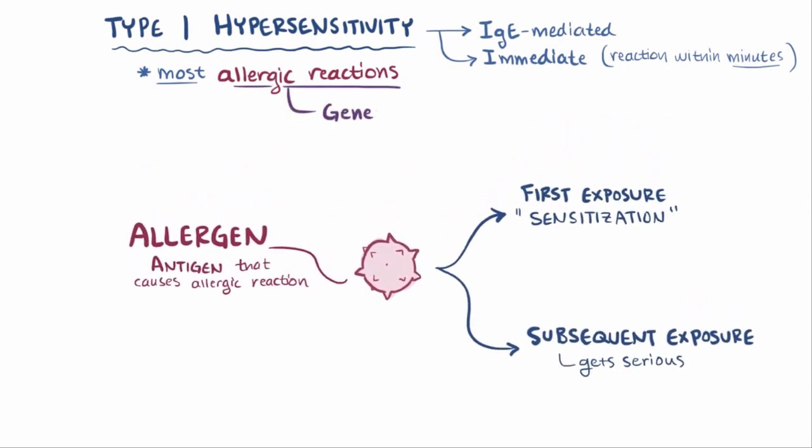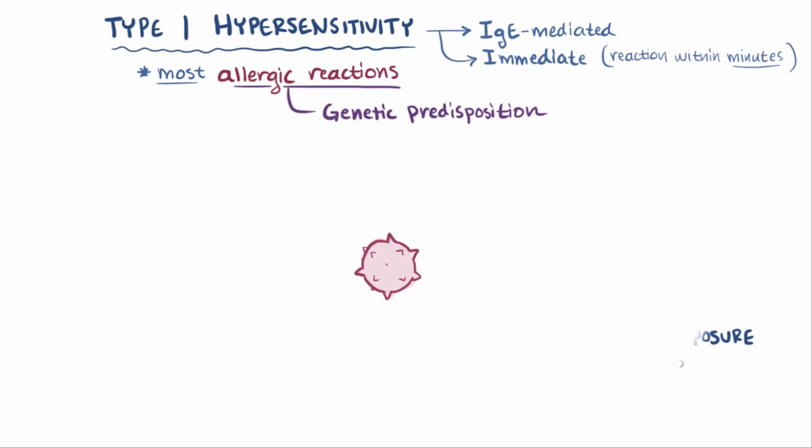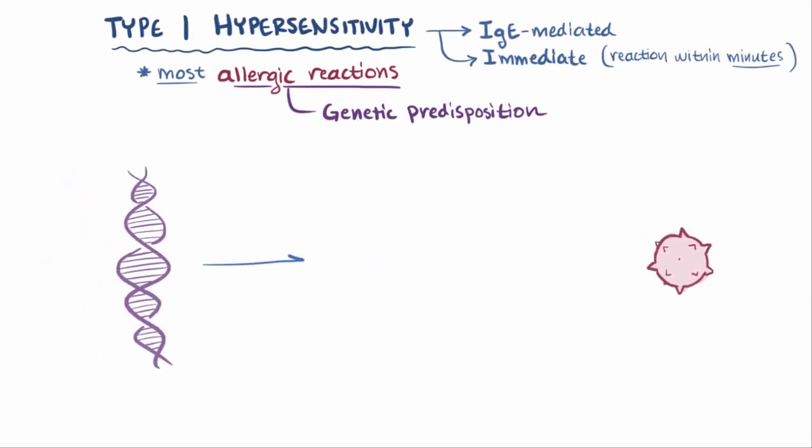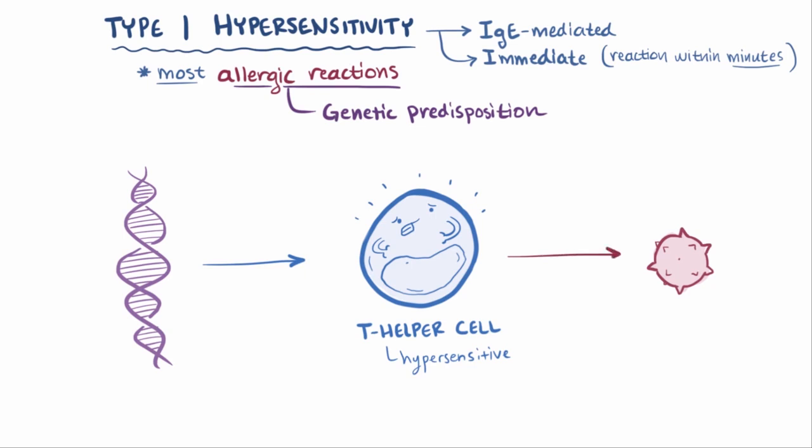People that react to these allergens usually have a genetic predisposition to having overreactions to unknown molecules or allergens, and this means that these people have certain genes that cause their T helper cells to be more hypersensitive to certain antigens. Since the production of these T helper cells is genetically linked, allergies to things tend to run in families.